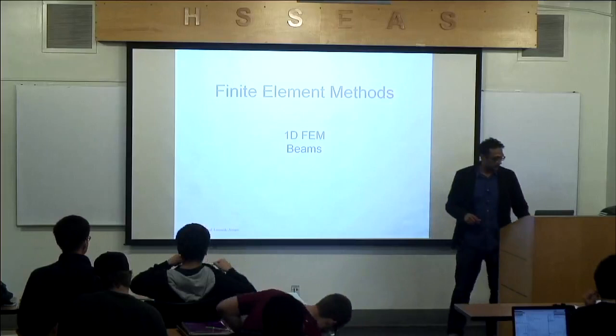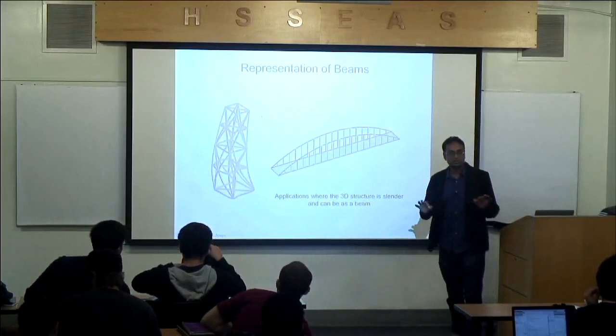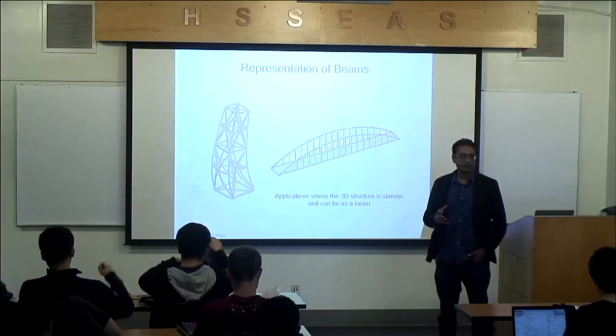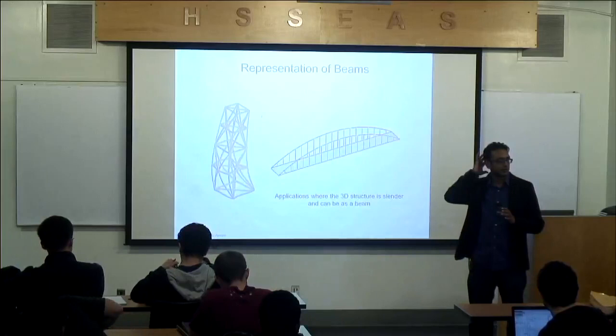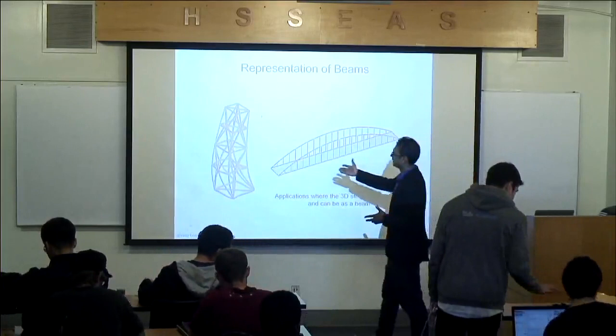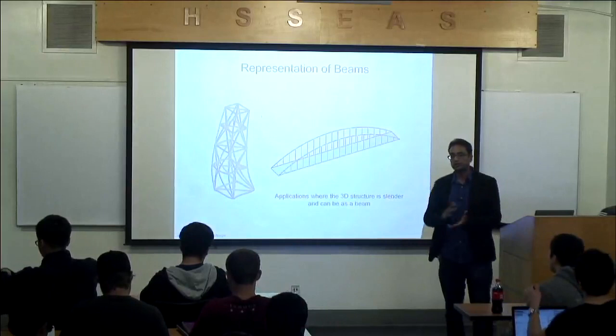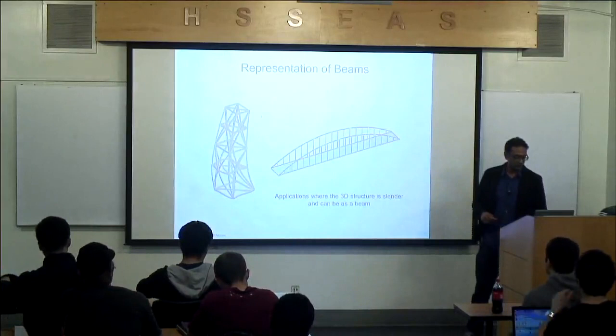Finite elements for beams. Typically beams are slender structures that can be used to model 3D solids, but these 3D solids are slender. They can be non-uniform cross-section, but the cross-section has to be small compared to the length of the beam. Examples include bridges and towers in civil engineering, as well as aircraft and many other components we see daily in real life.